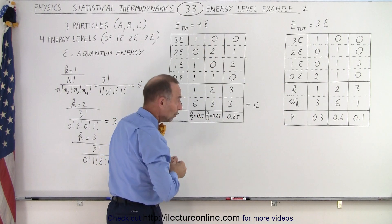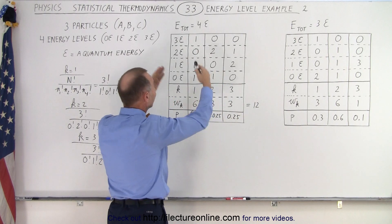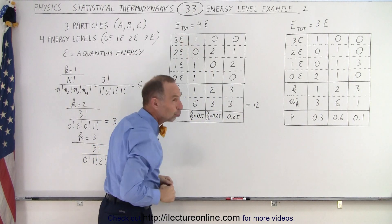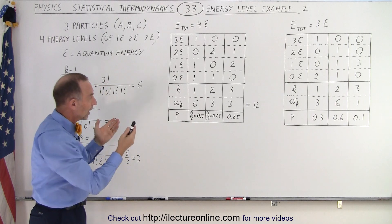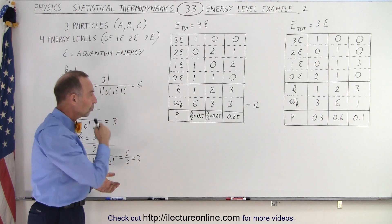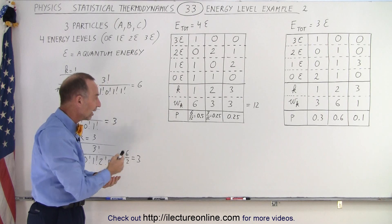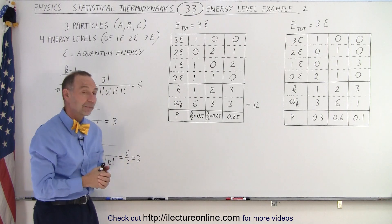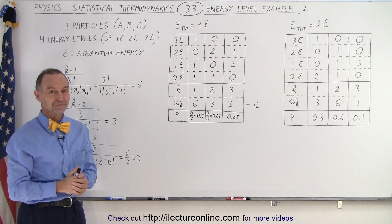So you can see that we can expand what we learned in the previous video onto a different situation with a different total amount of energy available for the 3 particles. And that's how they would be arranged with those numbers of microstates and the probabilities that we have before us. And that is how it's done.